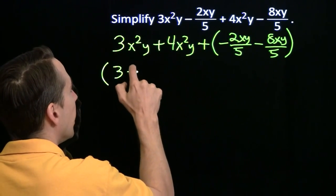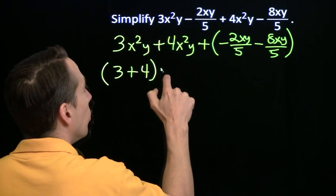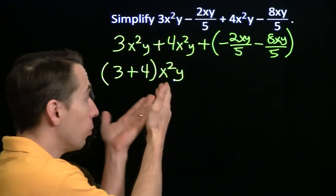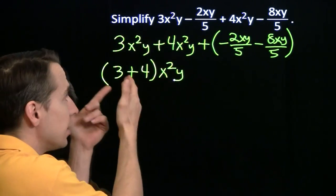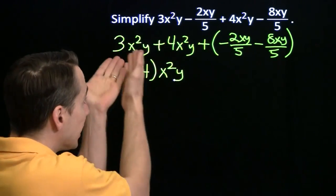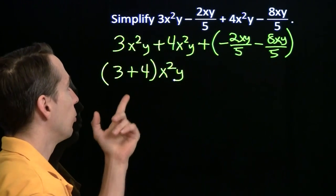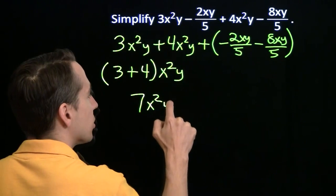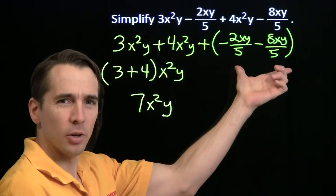And the reason, again, we can do that is we can factor out the x squared times y with the distributive property. If I expanded this back, I'd get 3 times x squared y. If I get 4 times x squared y, I'd get this right here. So I factored out the x squared times y. And of course, that just simplifies down to 7x squared y.